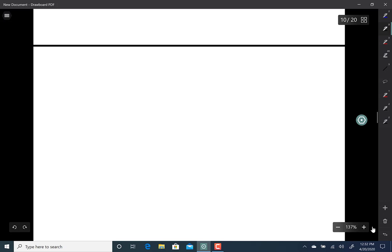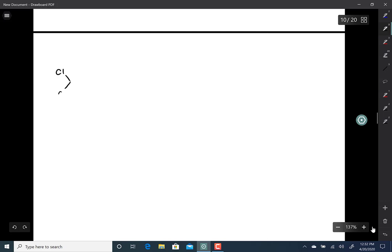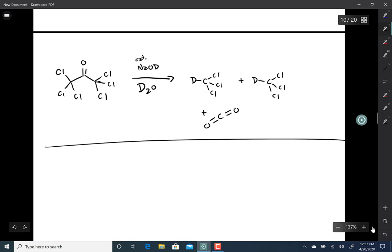So this is actually a way of making deuterated chloroform. You start with hexachloroacetone, which is dirt cheap, and add in D2O and the catalytic amount of NaOD. And once you start to get the other product is deuterated chloroform and carbon dioxide. The mechanism of this, I'll leave for the problem set.